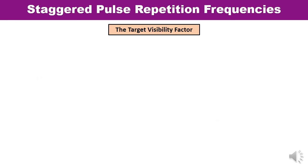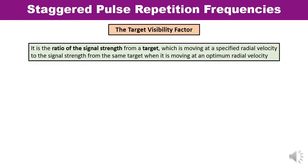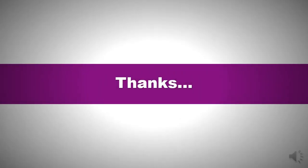One more important factor is the target visibility factor. It is the ratio of the signal strength from a target moving at a specified radial velocity to the signal strength from the same target moving at an optimum radial velocity. This factor defines the capability of target visibility and relates to radar performance. Thank you so much for watching this video.